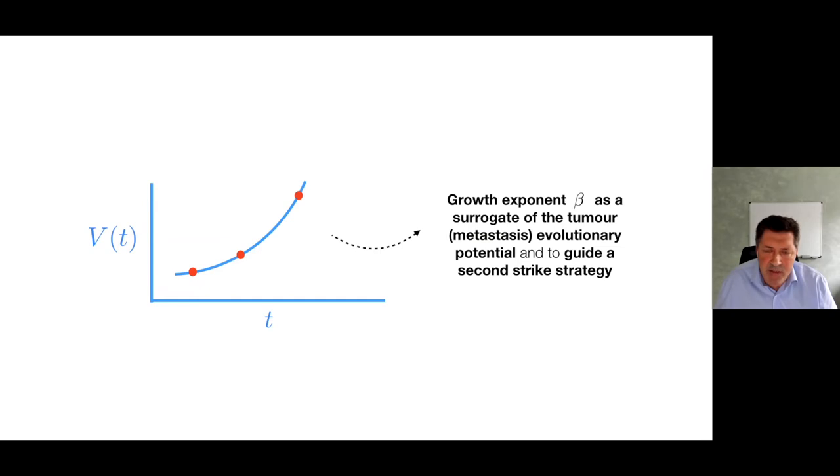It's very interesting because the growth exponent is something you can obtain just from the patient's images. It could be a surrogate of the tumor evolutionary potential and even could be used to guide a second strike strategy. Bob Gatenby yesterday was suggesting the possibility of using the reduction of heterogeneity after first strike treatments to design therapeutic strategies, maybe more aggressive or effective, keeping into account the goal of evolutionary extinction of the tumor. This is very interesting because beta could give you a hint on what are your chances of defeating the tumor with a second strike strategy.